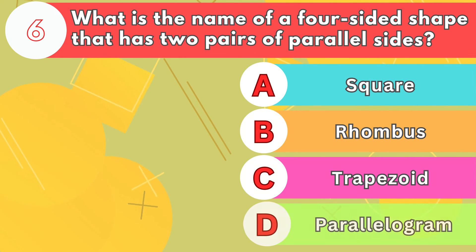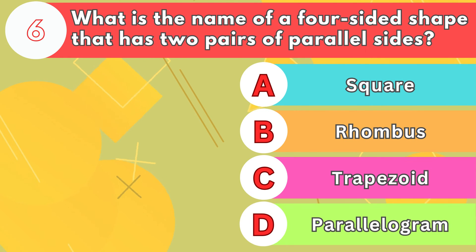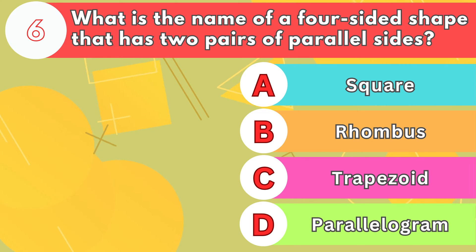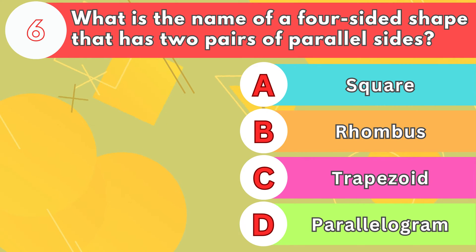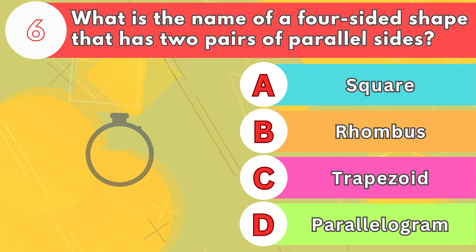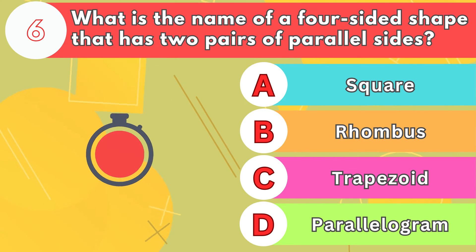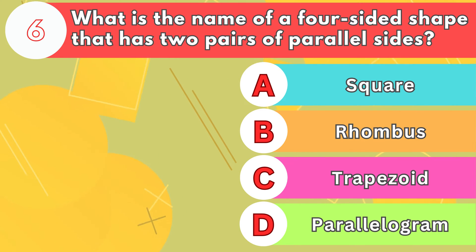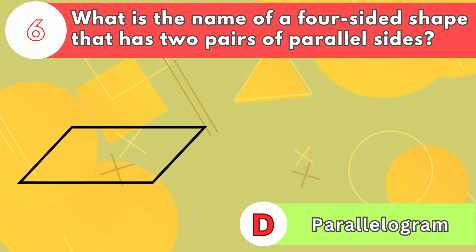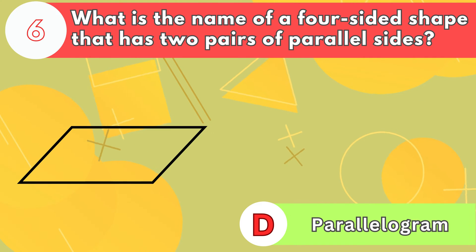Number 6. What is the name of a four-sided shape that has two pairs of parallel sides? The answer is letter D, parallelogram.